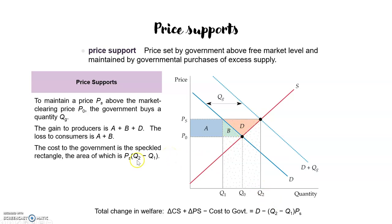The government is the one that has to pay for the output it purchases. The government will pay qg — which is the difference between q2 and q1 — at the price PS. The cost to the government is exactly this area: qg multiplied by PS, which is the speckled rectangle including areas d and b, or PS multiplied by (q2 minus q1).